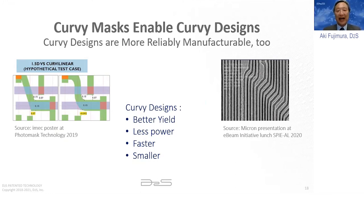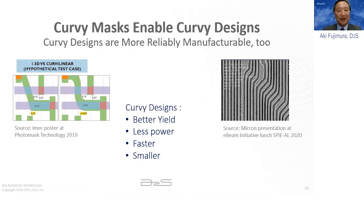Curvilinear ILT produces the curvilinear masks. Because of the way it works with pixels — all curvilinear ILT works with pixels regardless of vendor — it's resilient to the target wafer designs also being curvilinear. That is very exciting in terms of potential. I come originally from the design world and understand very well how deeply entrenched it is with the Manhattan assumption.